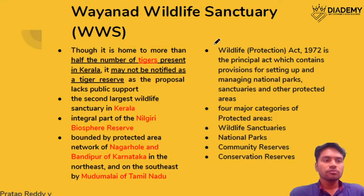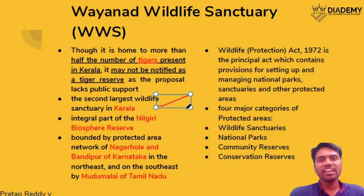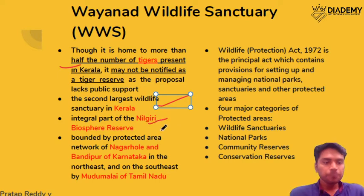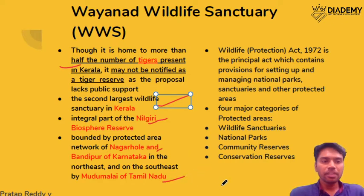The next topic is Wayanad Wildlife Sanctuary in Kerala, the second largest wildlife sanctuary in Kerala. Though it is home to nearly half of the tigers in Kerala, it has not been declared a tiger reserve — that was the news. It is an integral part of the Nilgiri Biosphere Reserve, bounded by Nagarhole and Bandipur of Karnataka and Mudumalai of Tamil Nadu, forming a continuum of forest in southern India.